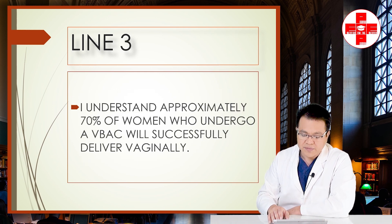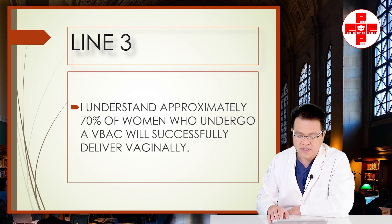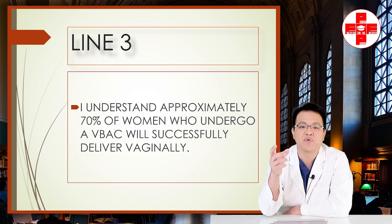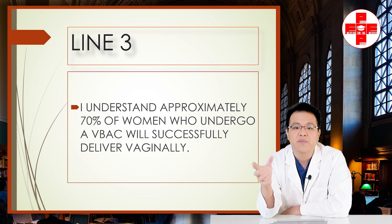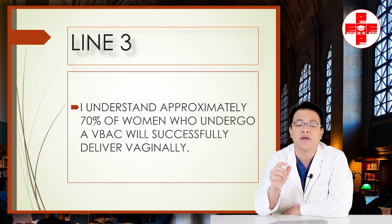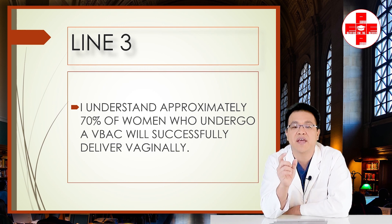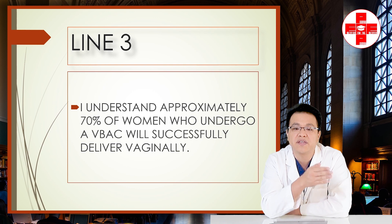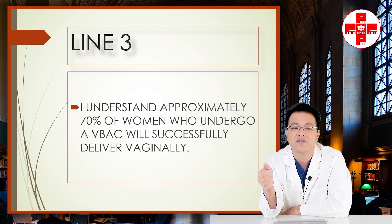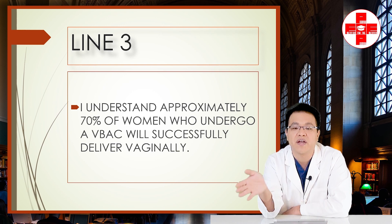Line three: 'I understand approximately 70% of women who undergo a VBAC will successfully deliver vaginally.' Just because you choose a trial of labor doesn't mean everyone will deliver vaginally 100% of the time — it's realistically about 70%. There are different risk factors that can adjust this up or down. The VBAC calculator created by the Maternal Fetal Medicine Unit Network can help you decide, based on your success rates and risks of repeat C-section, whether those benefits justify the risks.